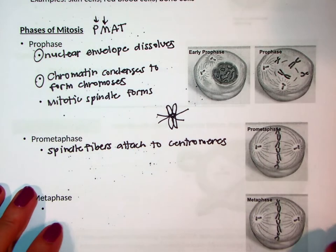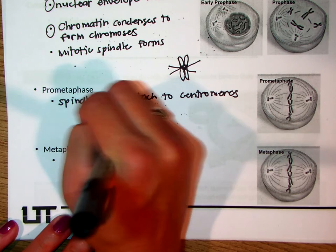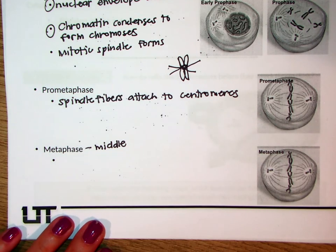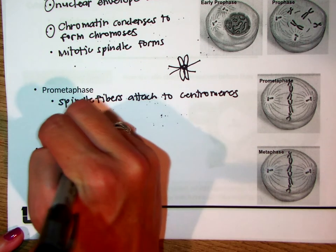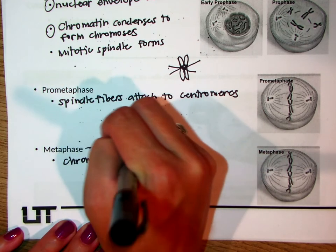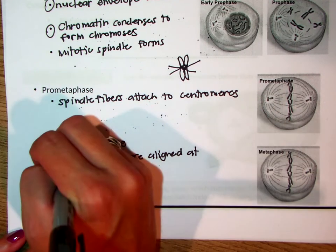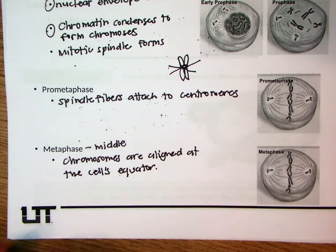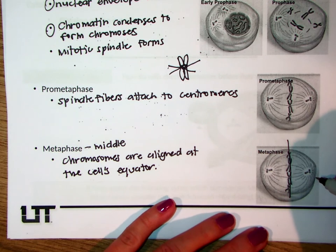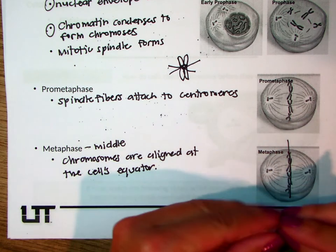Next we've got metaphase — the M in PMAT. I like to think M for metaphase, middle — that's how I remember it. The chromosomes are aligned at the cell's equator, or in other words, down the middle. You can see them lining up along the middle, and we've got those spindle fibers attaching to the centromere, getting ready to pull them apart.